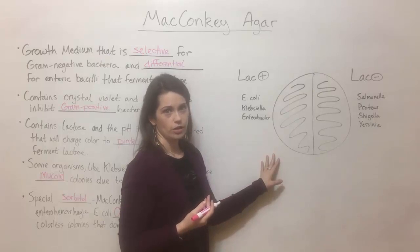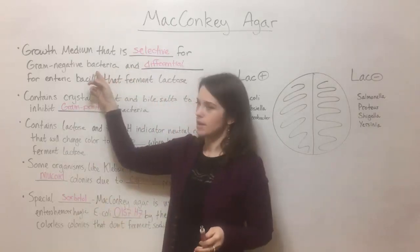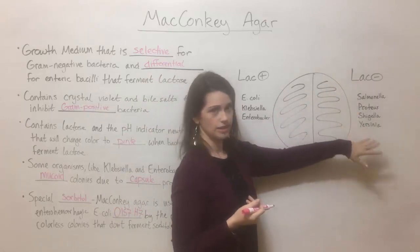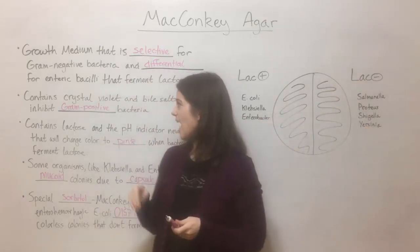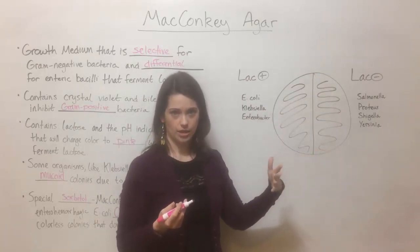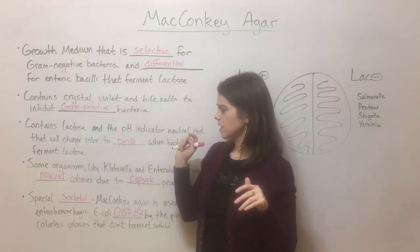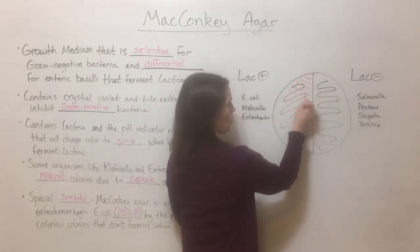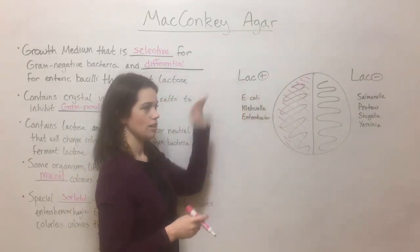Now let's talk about what a MacConkey agar plate looks like. Remember that initially it's going to be a faint yellow color, and it's selective for gram-negative bacteria, so there are lots that can grow: E. coli, Klebsiella, Enterobacter, Salmonella, Proteus, Shigella, Yersinia. If they're lac-negative, meaning they cannot ferment lactose, the media will stay its regular yellow color — you'll have bacterial growth but no color change. If the bacteria are lac-positive, meaning they can ferment the lactose, they create an acid that lowers the pH, causing the neutral red to turn pink. The plate will turn pink wherever lactose fermentation is happening.